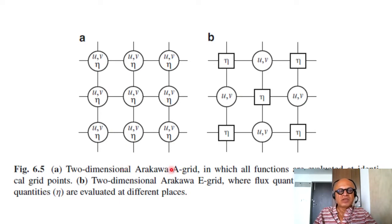So here we have two-dimensional Arakawa A grid in which all functions are evaluated at identical grid points. So you can see at the intersection we have u, v and eta for all grid points even though we have volume quantity eta averaged over the grid box and flux quantities should be coming in here and here right.